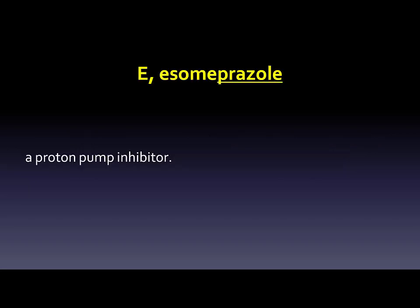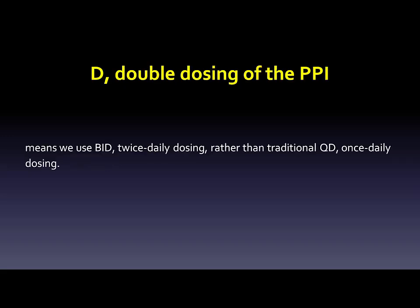E: Esomeprazole, a proton pump inhibitor. D: Double dosing of the PPI means we use BID, twice daily dosing, rather than traditional QD, once daily dosing.